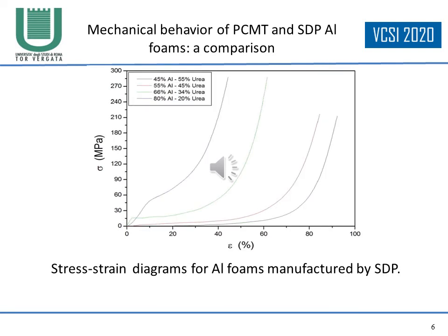Stress-strain diagrams for aluminum foams manufactured by the SDP process show different urea content and different mechanical behavior.